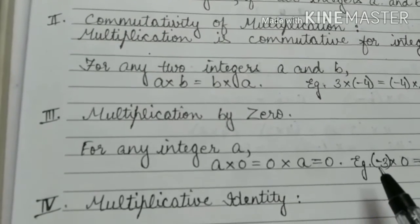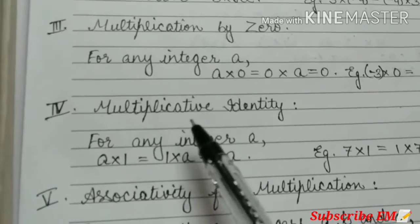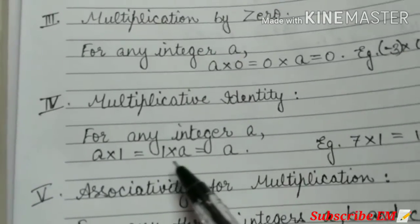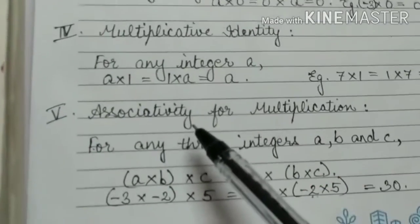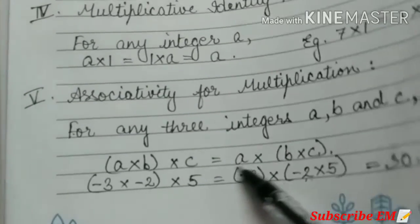Multiplication A into 0 equal to 0 into A equal to 0. Here also you can write one example. Fourth multiplicative identity that is 1. Fifth one associativity. In this also you can write one example.